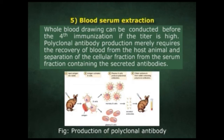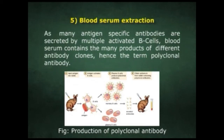The fifth step is blood serum extraction. Whole blood drawing can be conducted before the fourth immunization if the titer is high. Polyclonal antibody production requires the recovery of blood from the host animal and separation of the cellular fraction from the serum fraction containing the secreted antibodies. Since many antigen-specific antibodies are secreted by multiple activated B cells, blood serum contains the products of different antibody clones — hence the term polyclonal antibody.